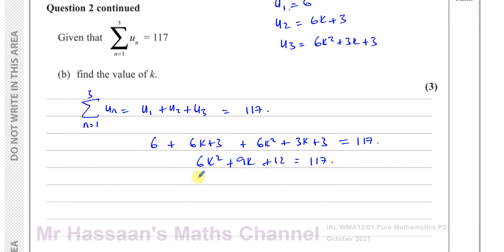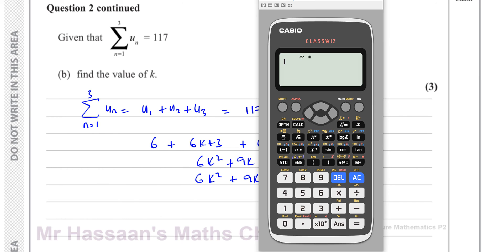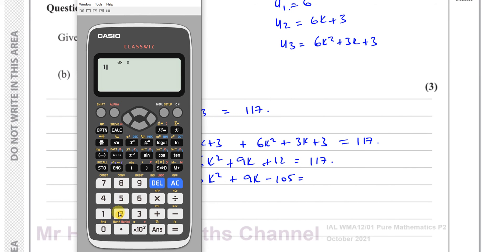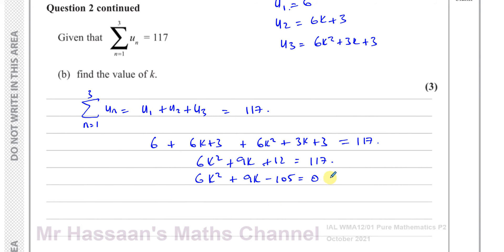So here we have a quadratic equation. 6K squared plus 9K plus 12 minus 117, which is negative 105, equals 0.